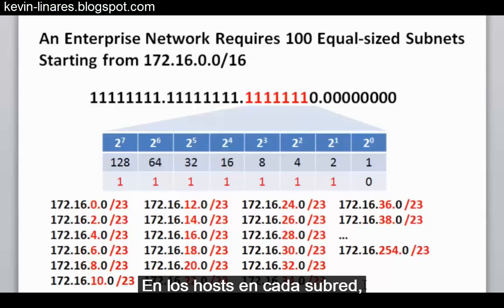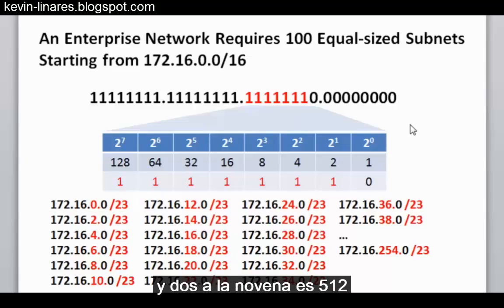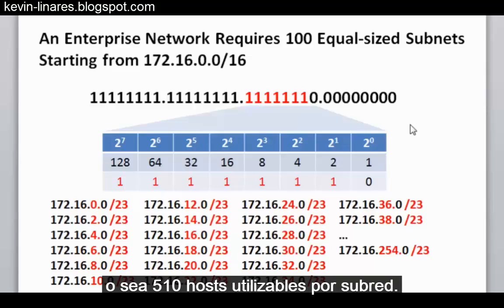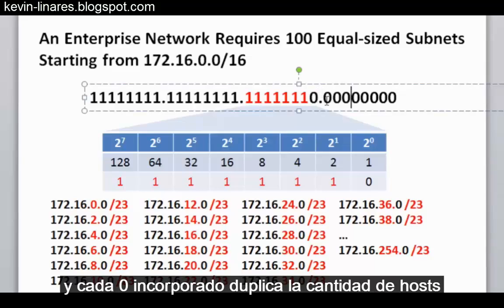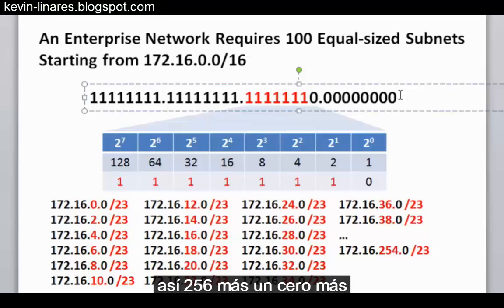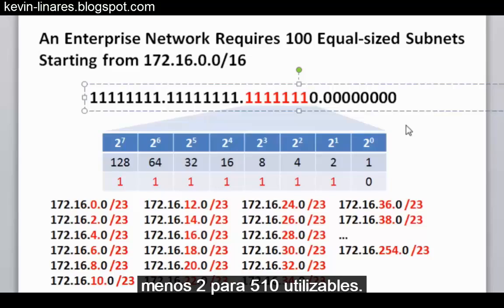For hosts in each subnet, we have nine zeros in our subnet mask. Two to the ninth power is 512, so we'll have 512 minus two, giving us 510 usable hosts per subnet. An easy way to figure out the hosts: eight zeros is 256 hosts, and every zero added doubles the number of hosts. So 256 plus one more zero would be 512 hosts, minus two for 510 usable.